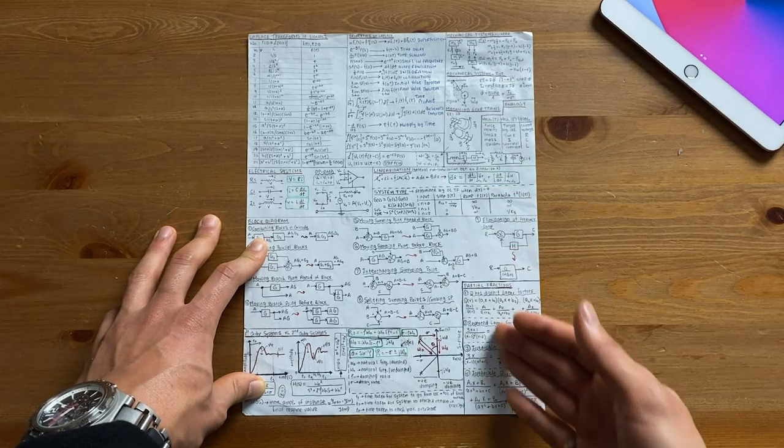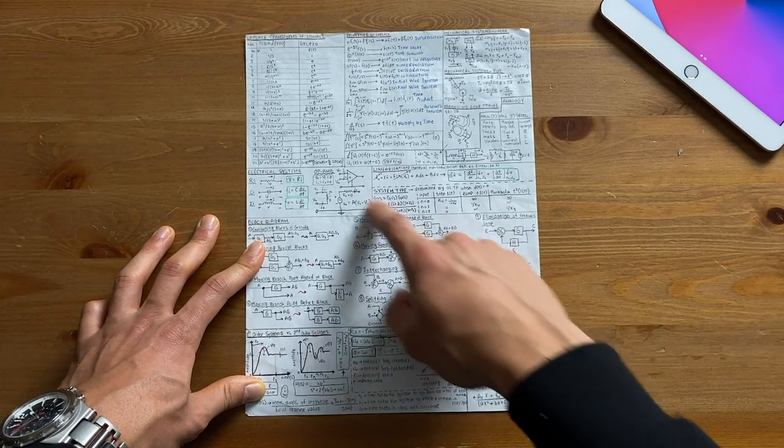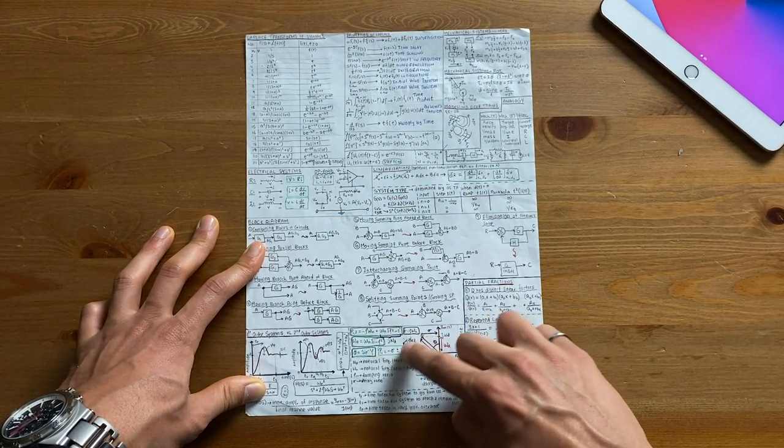This is what mine looked like and it allowed me to see the bigger picture of the entire course. I included all the useful diagrams and I boxed all the important equations in green as you can see right here.